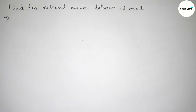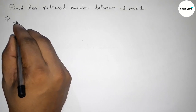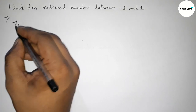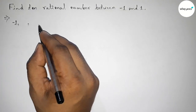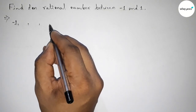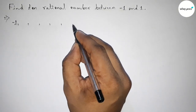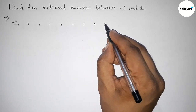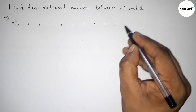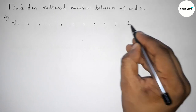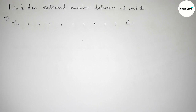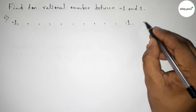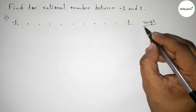First of all, let us solve this problem. We have to find 10 rational numbers, so we are taking 10 blank spaces to find and fill up those 10 rational numbers. First, taking 10 blank spaces between minus 1 and 1 by this way.